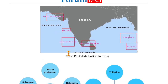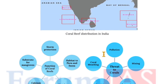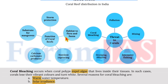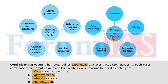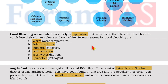Coral distribution in India includes Gulf of Kachchh, Malvan in Goa and Maharashtra, Lakshadweep, Gulf of Mannar, and parts of Andaman and Nicobar. Functions of coral include storm protection, habitat for flora and fauna, substrate for mangroves, calcium carbonate production, and nutrient capturing. Threats include pollution, mining, intensive fishing, dredging, shipping and coral bleaching.